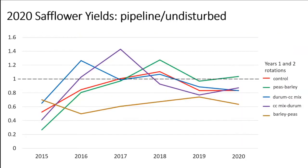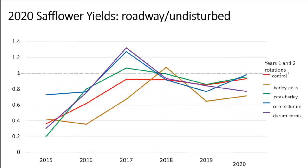If we just look at the differences where those disturbances occur over the undisturbed area, you can notice a lot of it shifts below one — meaning there's a decrease in yield over the pipeline compared with the undisturbed area. But it's a lot more evident when you look at the roadway, where all the traffic was moving. We were interested in what parameters caused this to occur.